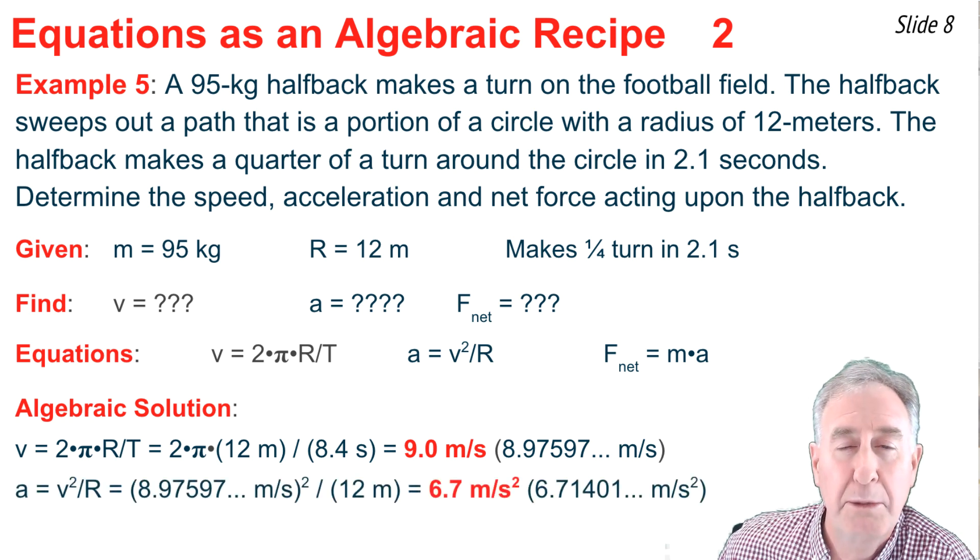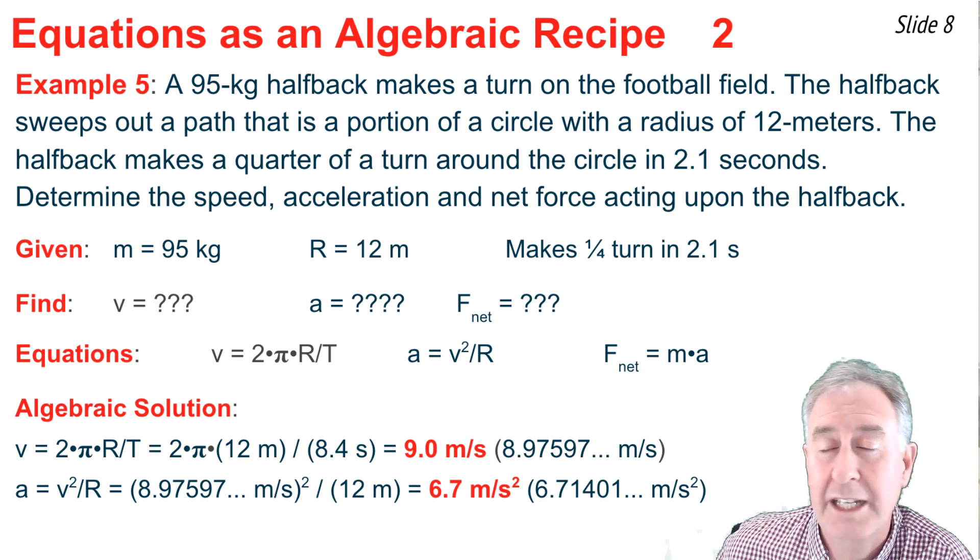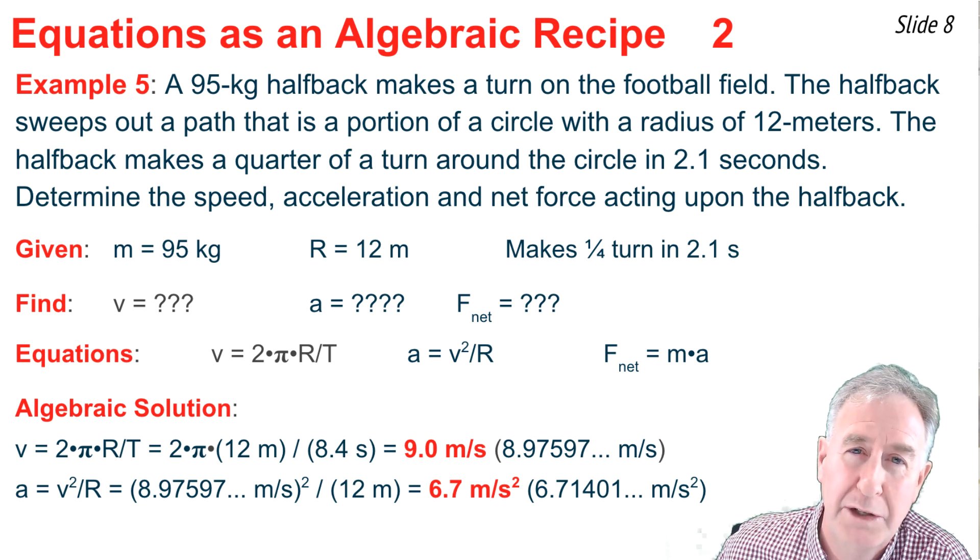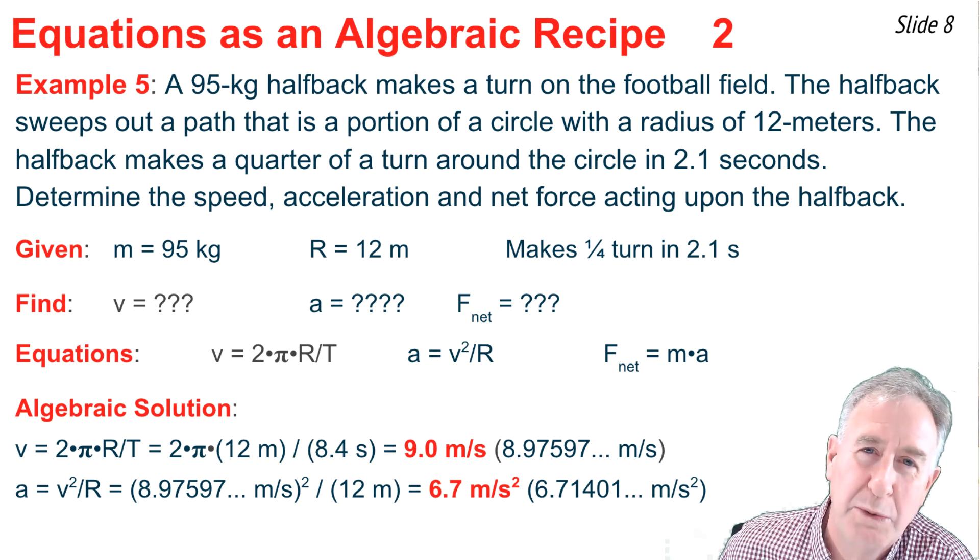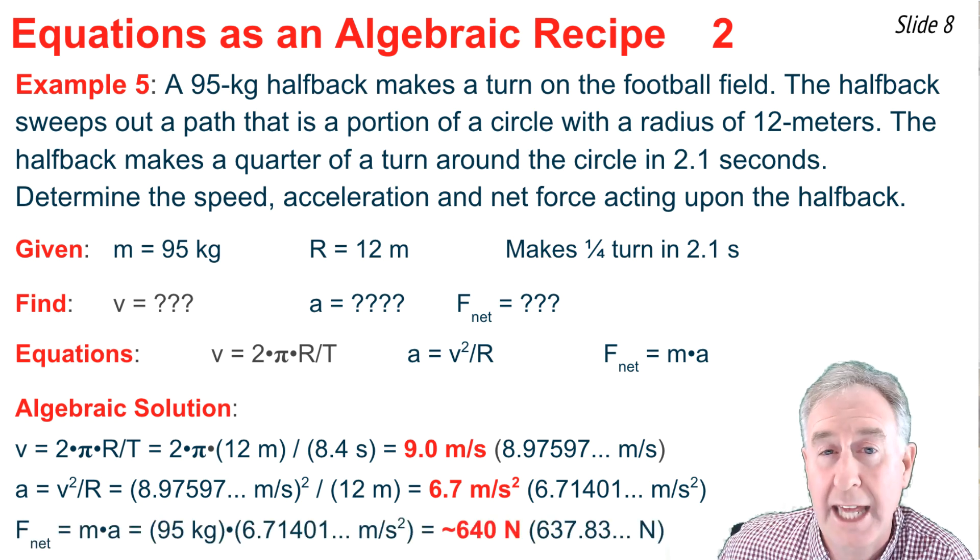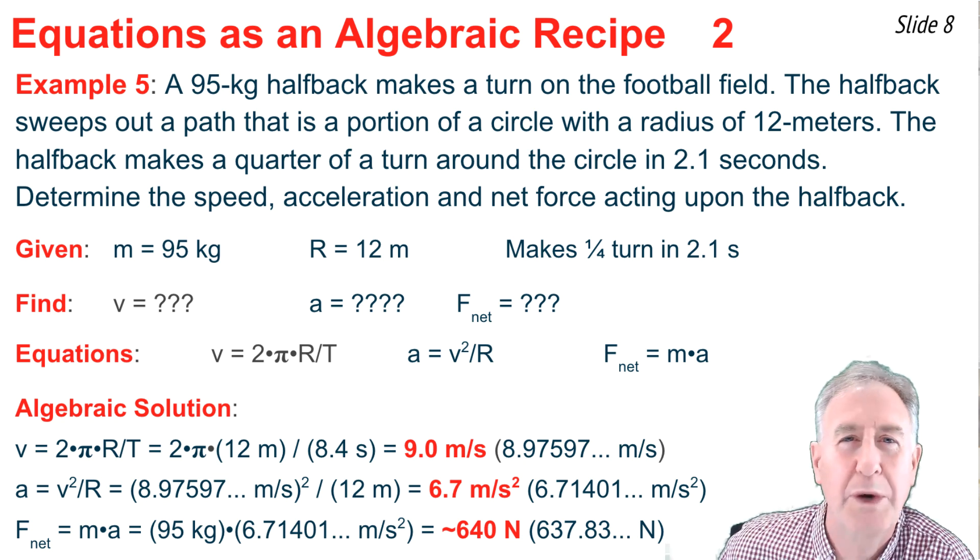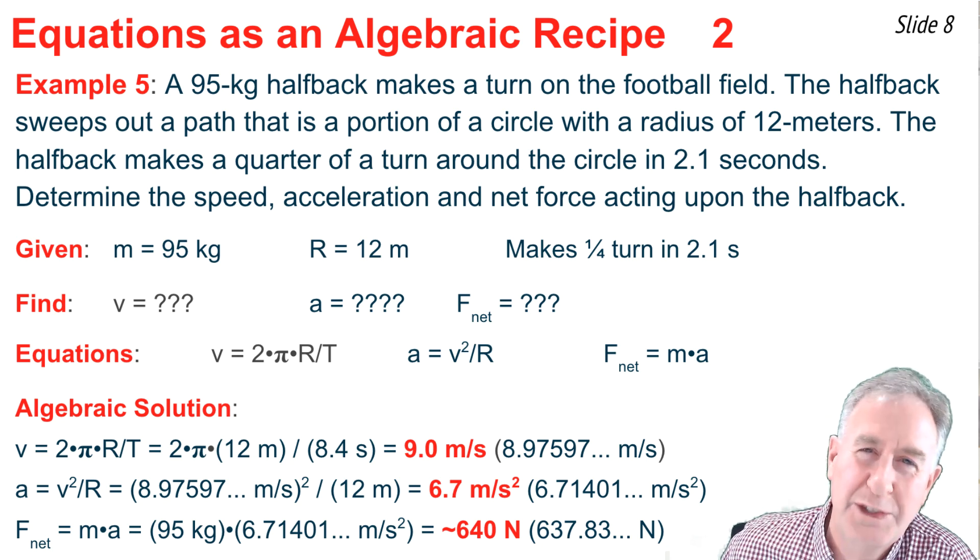Now to calculate the acceleration, it'll be a bit more straightforward. I'm going to go the v squared I just calculated divided by the radius. So I'm not going to take the 9.0 rounded figure, but the 8.97597 figure, square it, and divide by my 12 meters. When I do, I get an acceleration of approximately 6.7 meters per second squared. Now for the f net, I'm going to take the mass and multiply by the a I just calculated. That's 95 kilograms times the 6.71401 meters per second squared, and I end up getting an f net of 640 newtons.